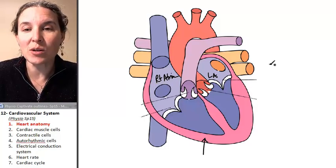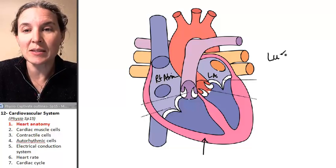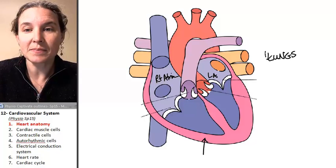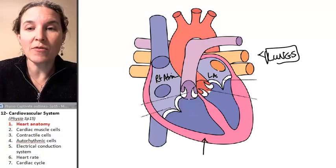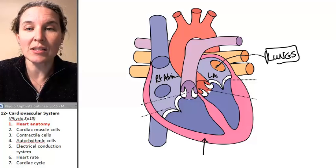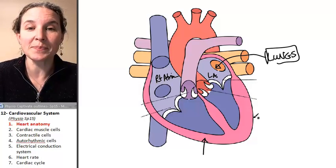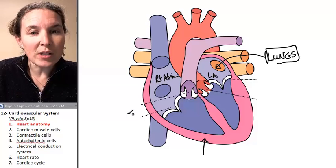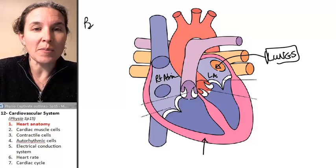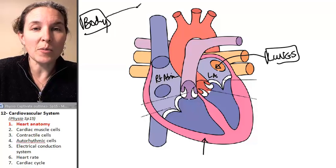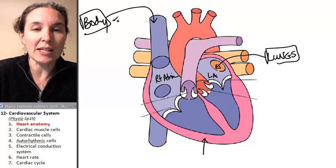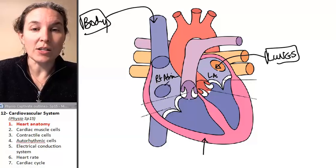The left atrium receives blood from the lungs. So blood from the lungs travels into the left atrium. The right atrium receives blood from the rest of the body. So blood from the rest of the body travels into the right atrium.